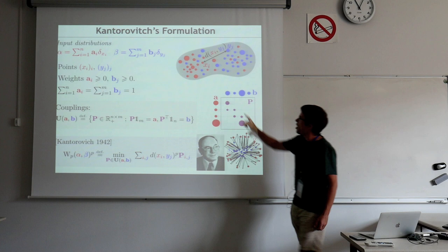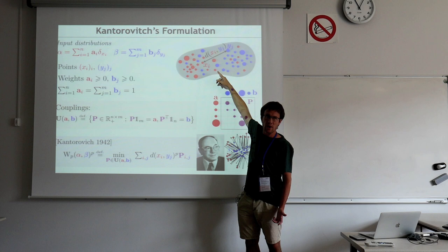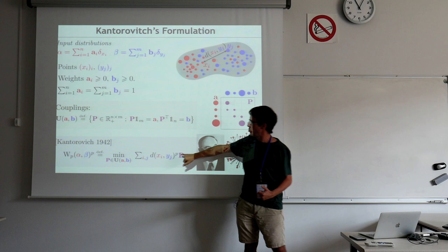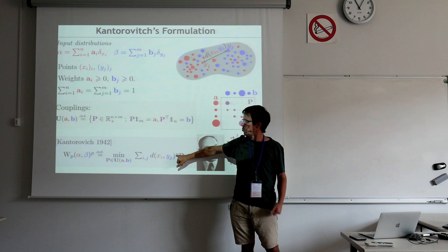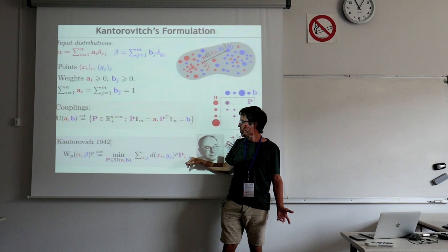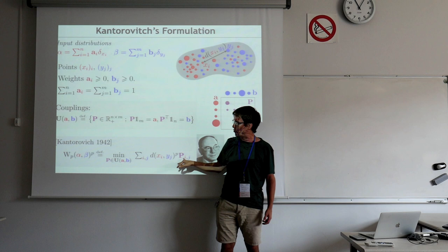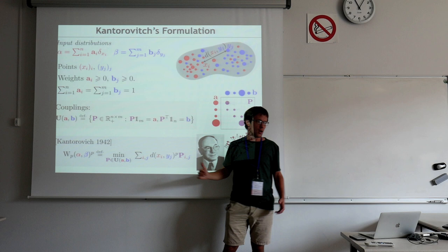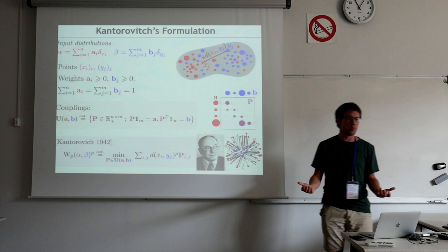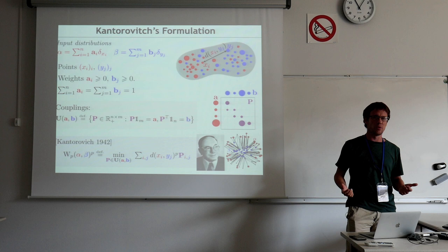This gives rise to the optimal transport problem: you choose a cost you pay when sending one unit of mass, and the most typical example is the distance to some power P. In Monge's formulation it was P equal to 1; most mathematicians use P equal to 2 because of the rich structure. You multiply this cost by the mass transferred, sum everything, and that's your total cost. The big advantage of Kantorovich's relaxation is this is just a linear function of P — you minimize a linear function under polyhedral constraints.